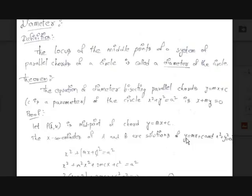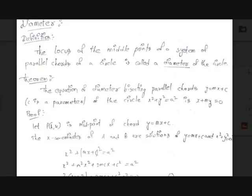For solving this, we have y = mx + c. Substitute this y value into the circle equation. You get x² + (mx + c)² = a², which expands to x² + m²x² + 2mcx + c² = a². Taking x² common from the first two terms: x²(1 + m²) + 2mcx + (c² − a²) = 0. Let this be equation number one.